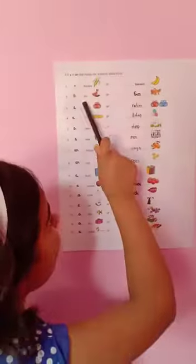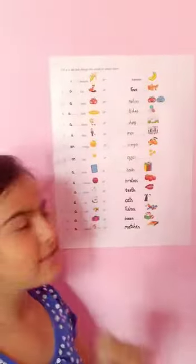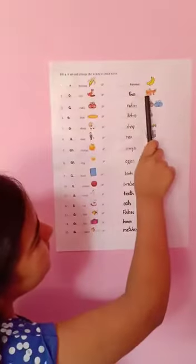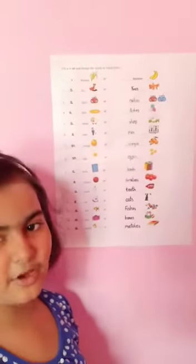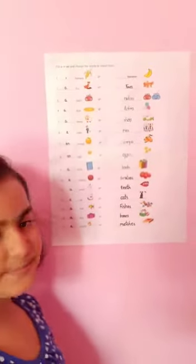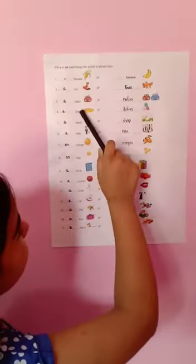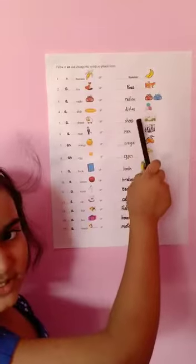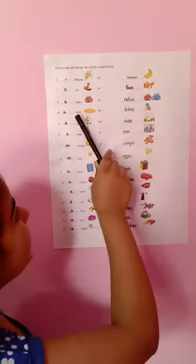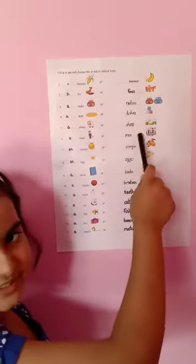A fox means one fox, and many fox means many foxes. Radio becomes radios. Dish becomes dishes.